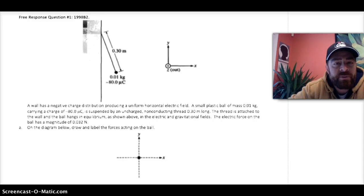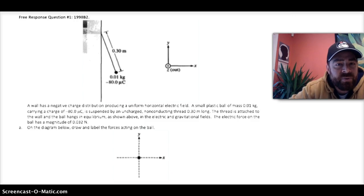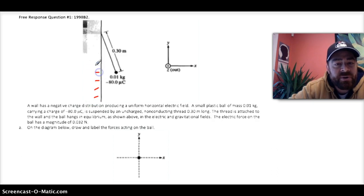This is question number one from review packet number four. It's the second question from the 1998 AP Physics B exam. It deals with a plastic ball that has a net negative charge. It's hovering away from the wall, which should be a clue that the wall is also charged negative in order to produce that repelling force.